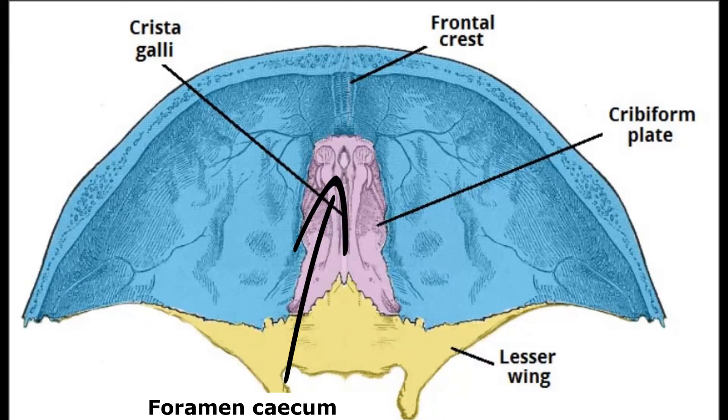Moving on to the middle cranial fossa. Here we've got a mnemonic — you can go with 'often some rays offer some heat,' or the one I prefer because it sounds silly and that's what we remember most: 'Only Some Rabbits Obey Senior Hairs.'